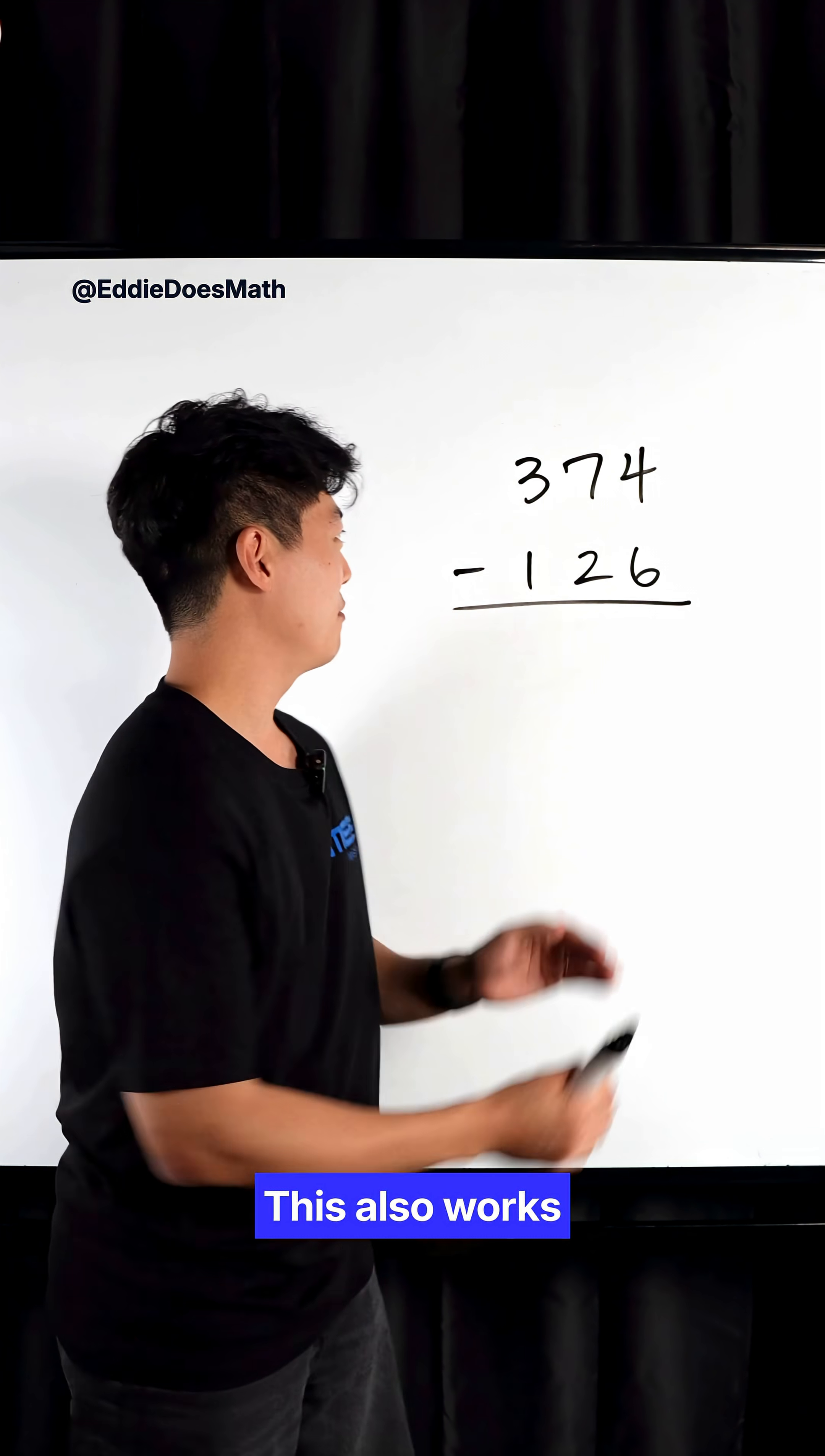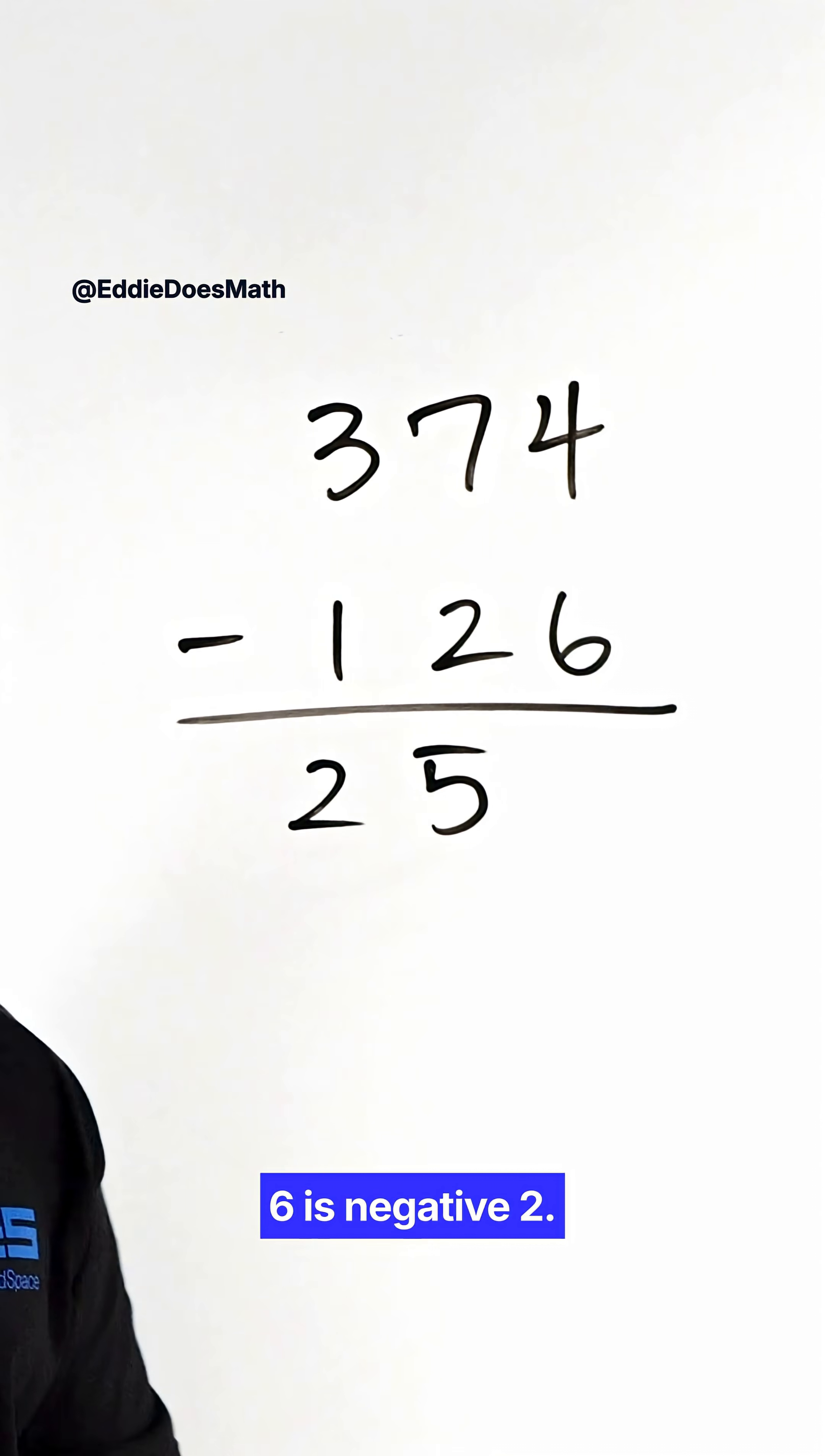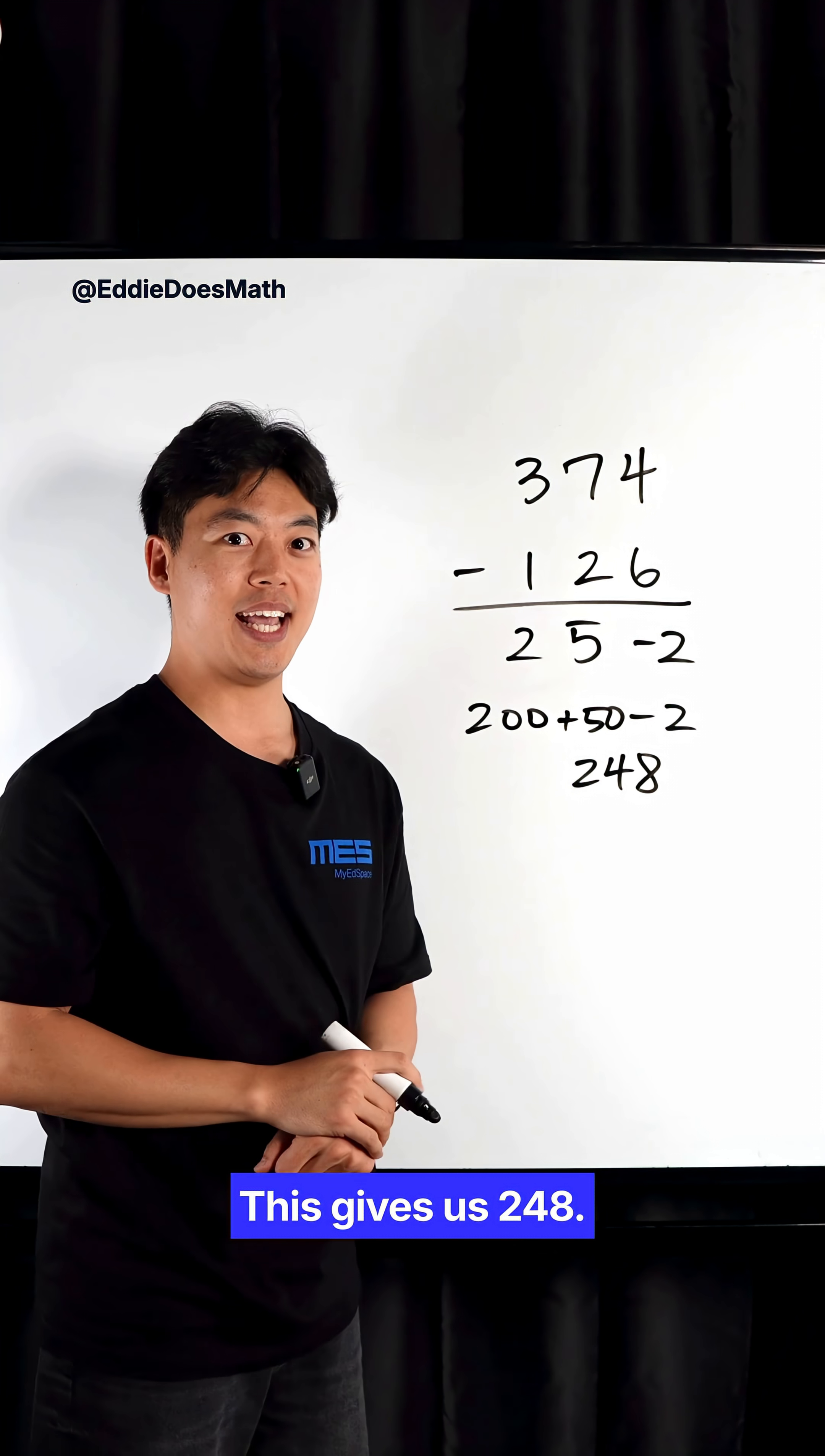This also works for three-digit numbers. 3 minus 1 is 2, 7 minus 2 is 5, and 4 minus 6 is negative 2. 2 stands for 200, 5 stands for 50 minus the 2. This gives us 248.